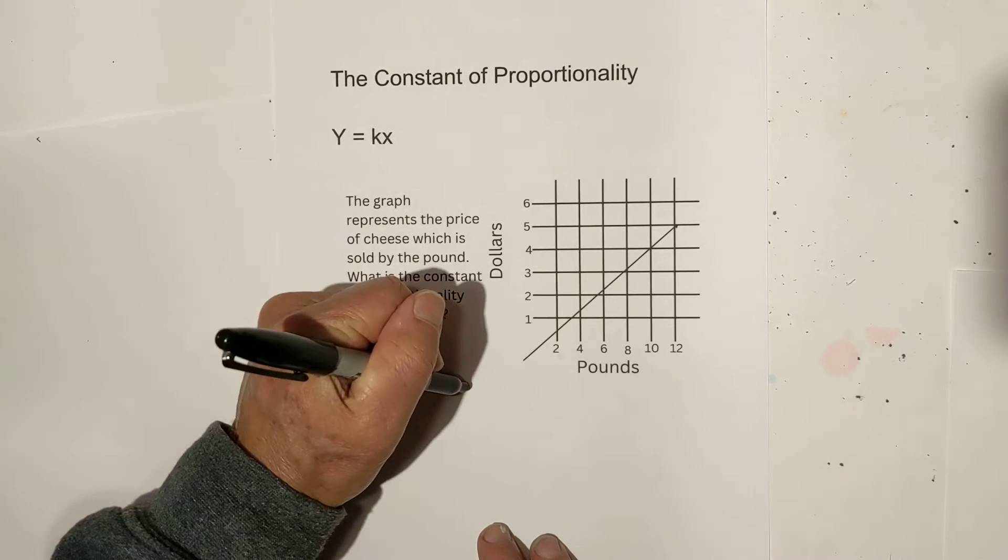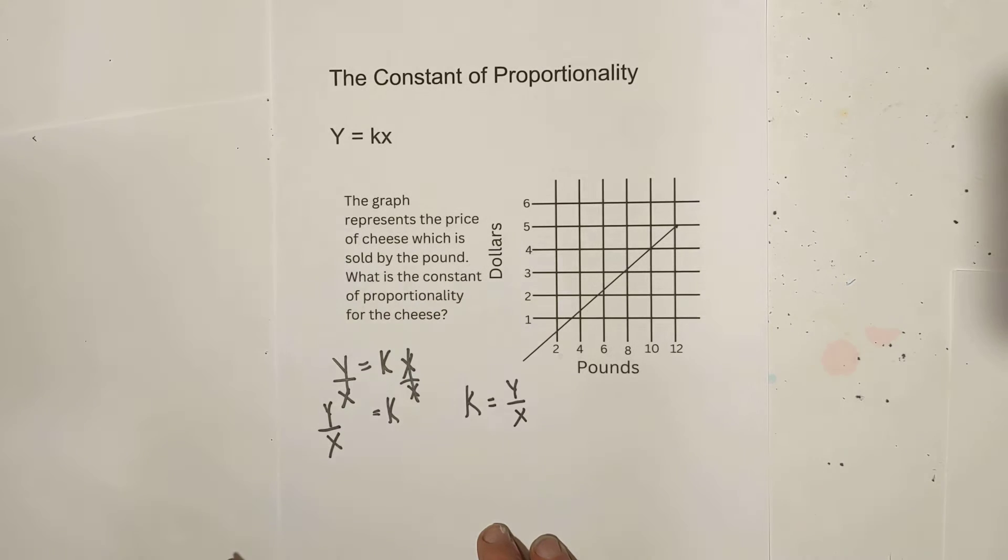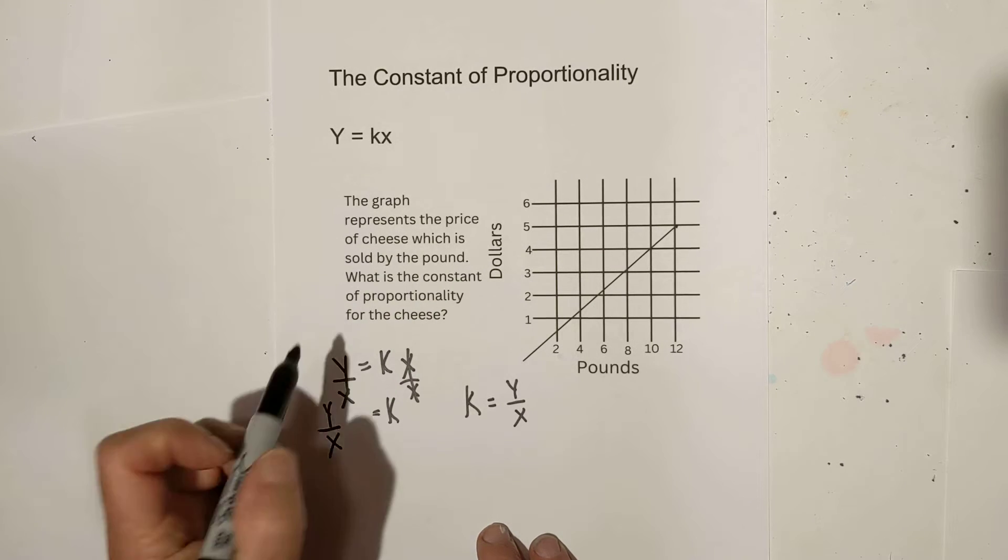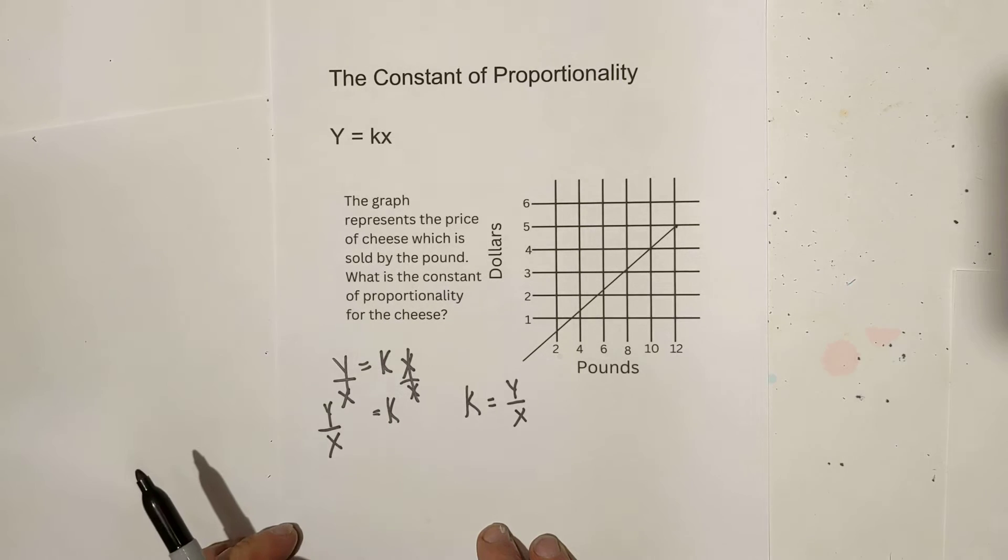Let's use this formula, k equals y divided by x, to solve this problem. The graph represents the price of cheese which is sold by the pound. What is the constant of proportionality for the cheese?